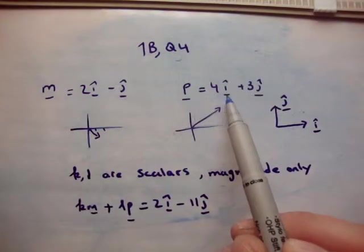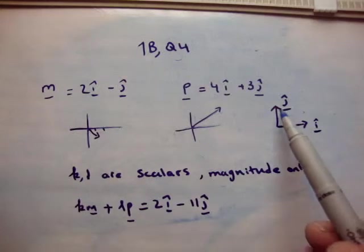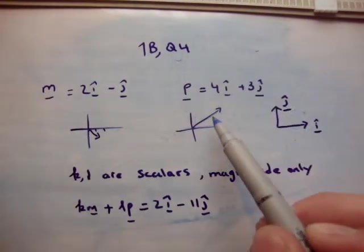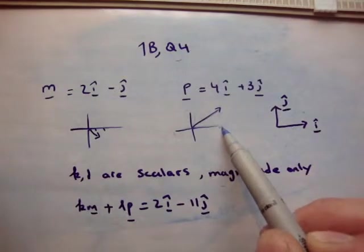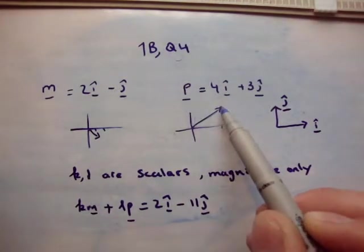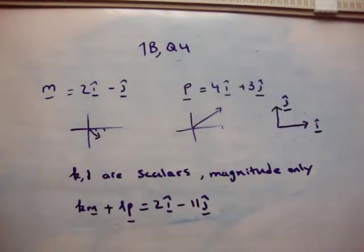Vector p is 4i-hat plus 3j-hat, once again corresponding to our usual unit vector notation. And it's 4 units in the positive x dimension, and 3 units in the positive y dimension, giving you a vector something like that.